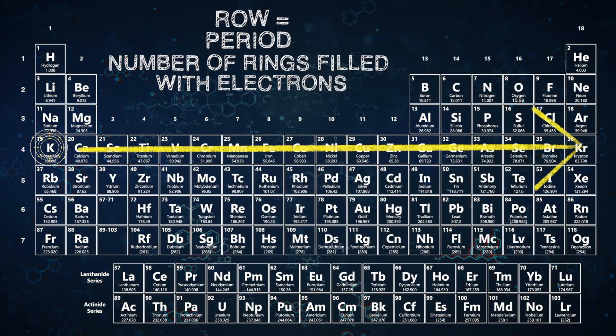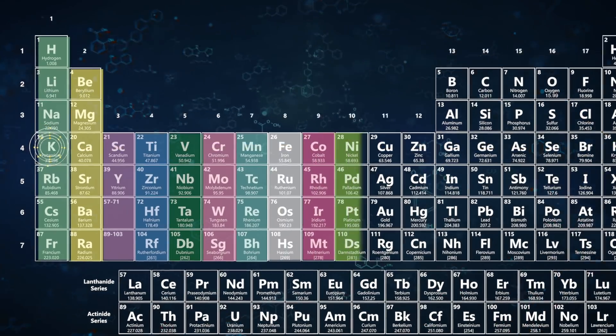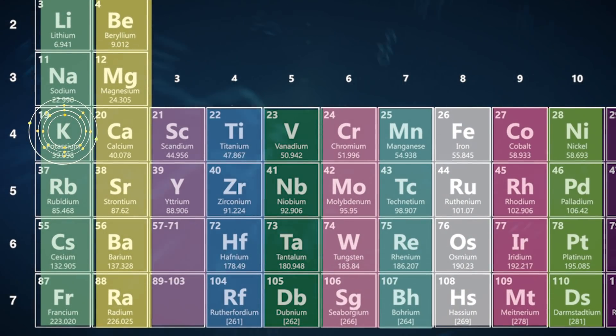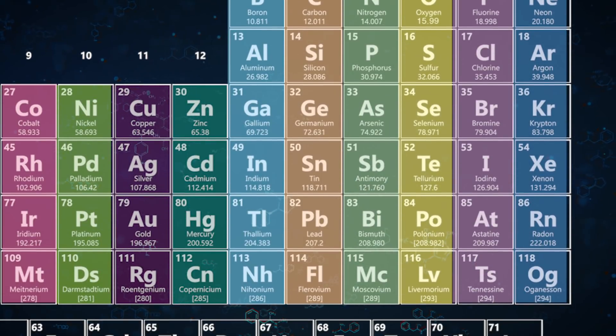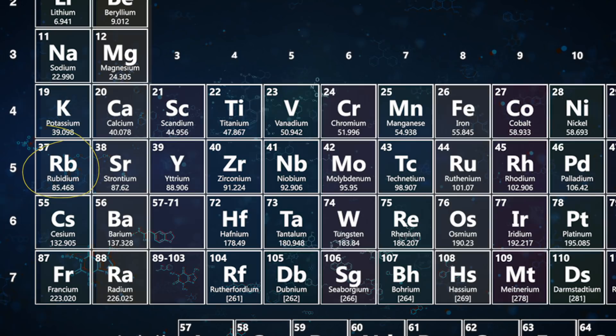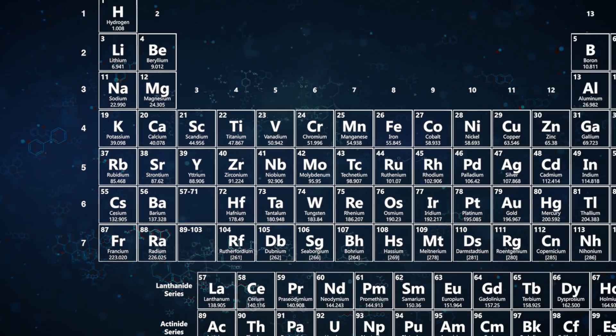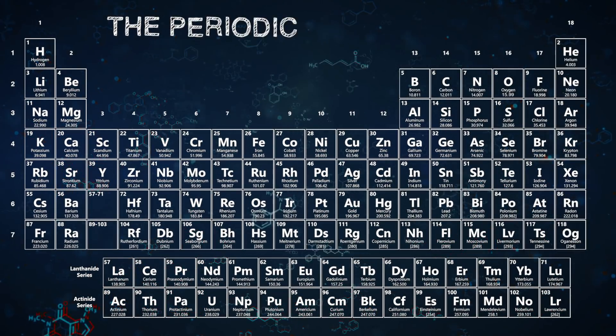When you combine that relationship between the rows and the periods, you get atoms that fill up their outer electron shell as you move to the right, starting over in the next level up when you come back to the first square on the left in the next period. The pattern repeats periodically, giving the Periodic Table its name.